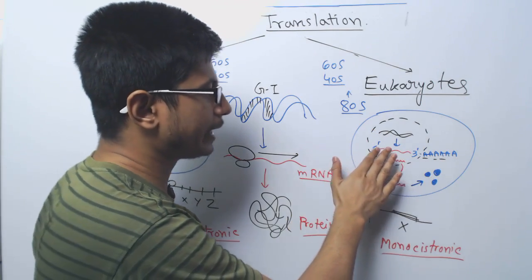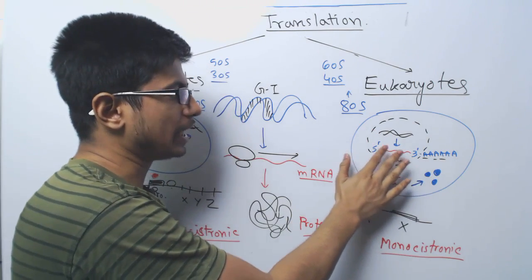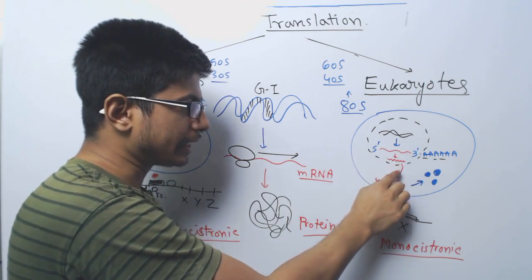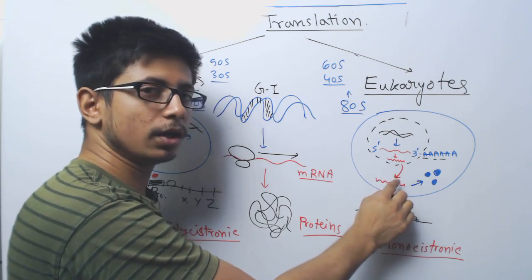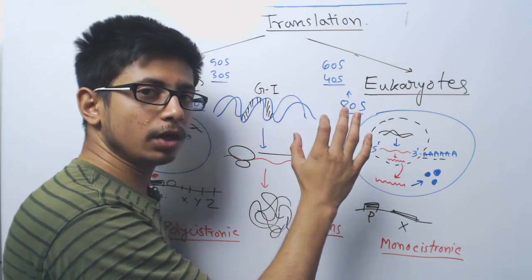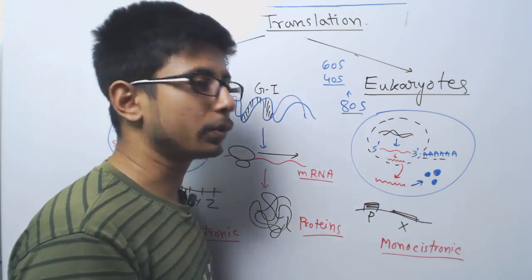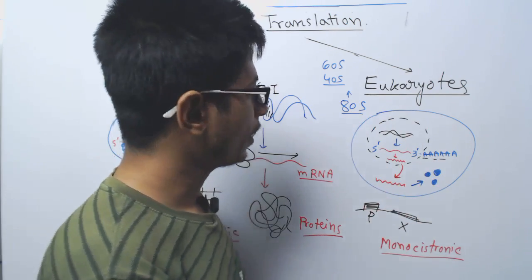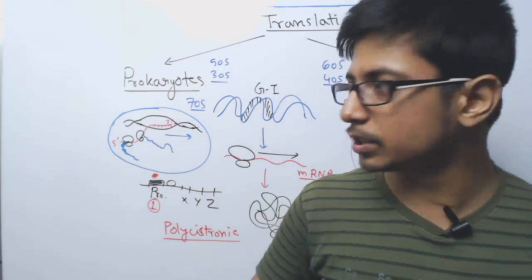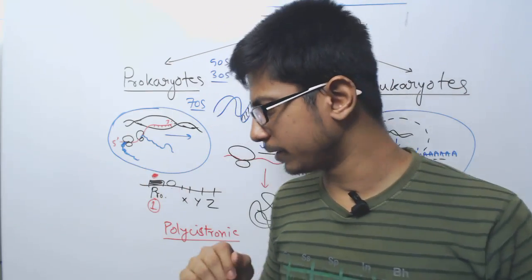But in eukaryotes, this is not the case. In eukaryotes, you first need to make the mRNA, then that mRNA is taken into the cytosol and then in the cytosol they will be converted into protein, coded into proteins. No simultaneous process. This is the second difference.